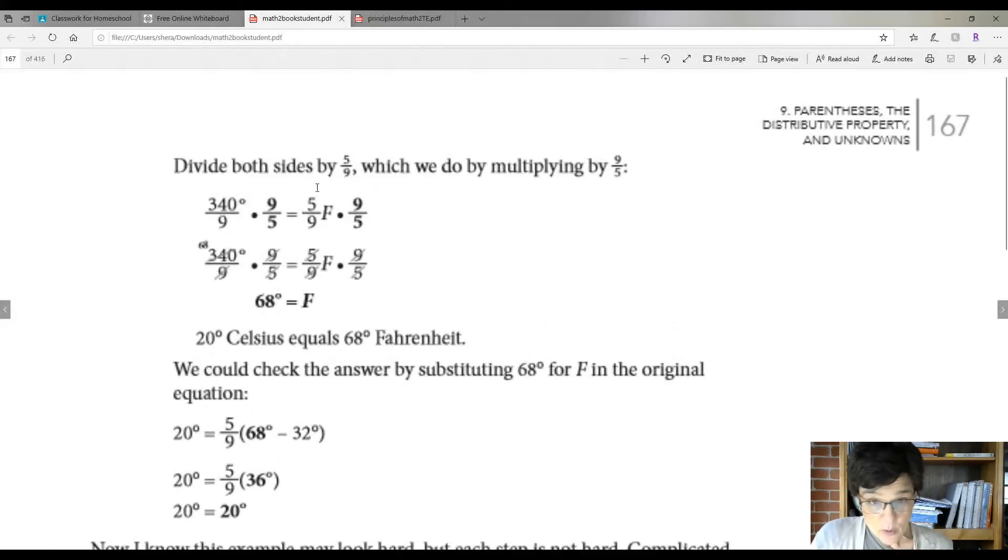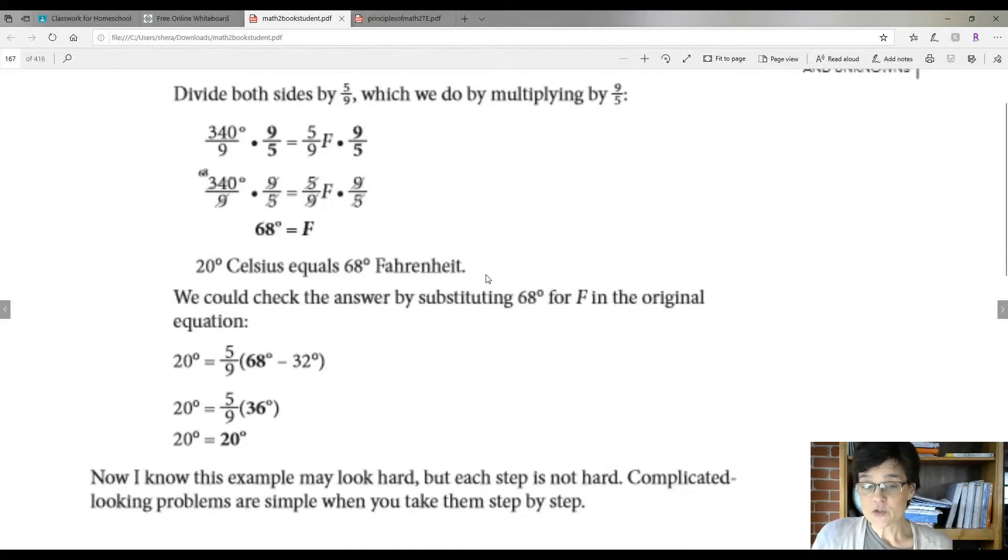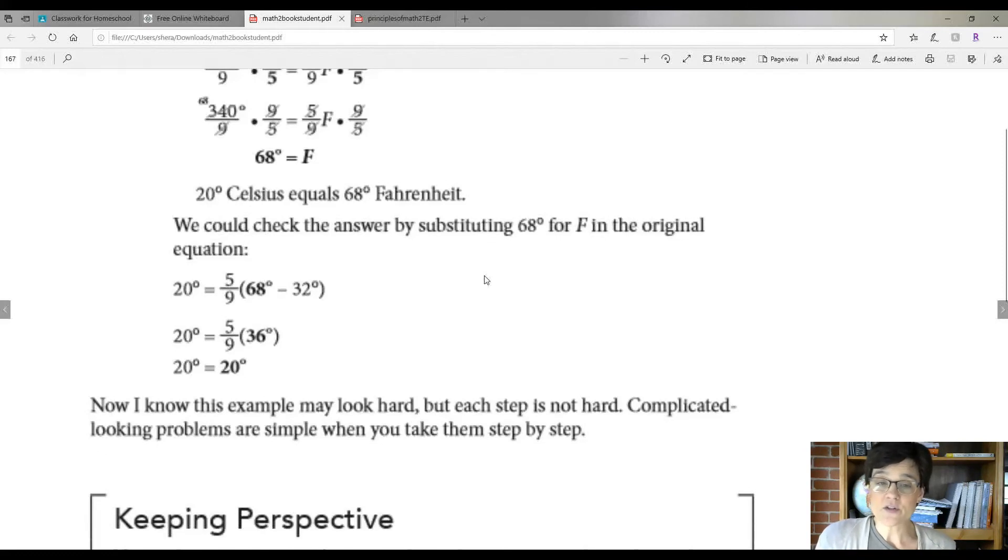So you're going to divide both sides by five ninths, which means you actually multiply by the reciprocal. Remember this? So five ninths and then times the reciprocal gets rid of all that. So we're left with F by itself. And then once we do all the figuring and calculations, we're left with 68 degrees Fahrenheit. So 20 degrees Celsius equals 68 degrees Fahrenheit.